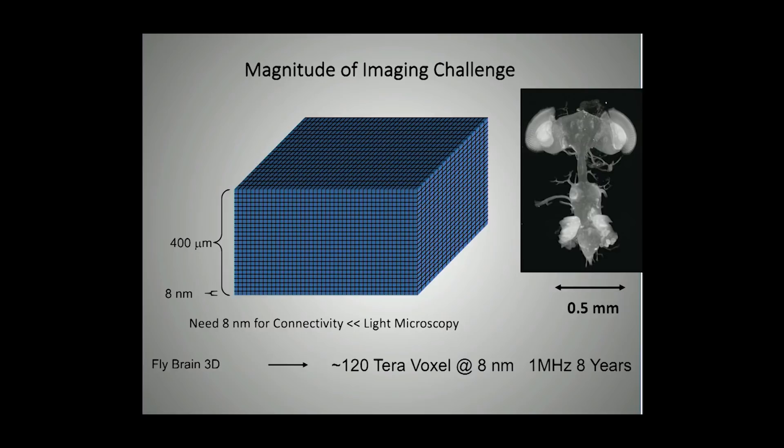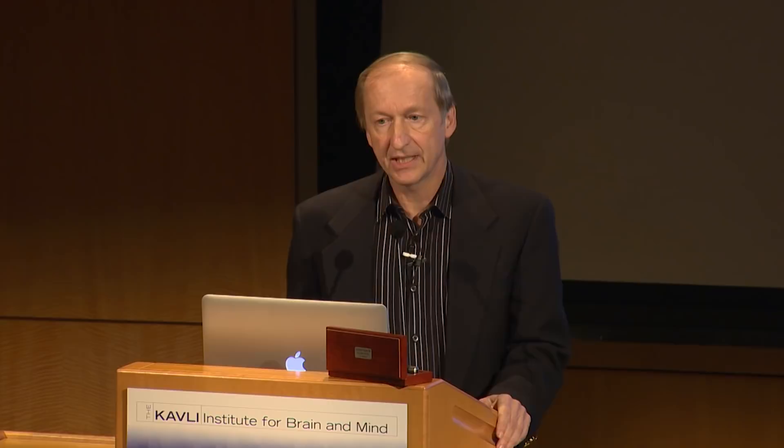If you quickly look at the numbers — how many voxels, how many pixels — eight nanometers compared to half a millimeter, there are lots. It's a good fraction of a petabyte, and if you're acquiring data at a modest rate of a megahertz, then you'd be acquiring data for eight years, even for something as simple as a fruit fly brain. We also need to really see the connectivity, which means going down to the electron microscope level — light microscopy cannot quite resolve the fine connectivity.